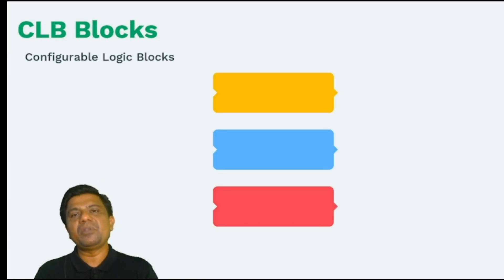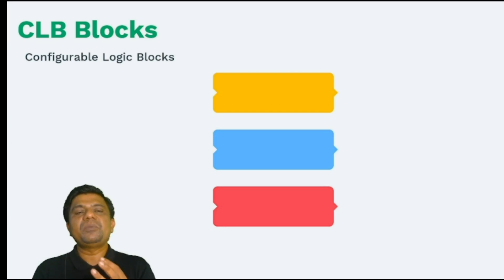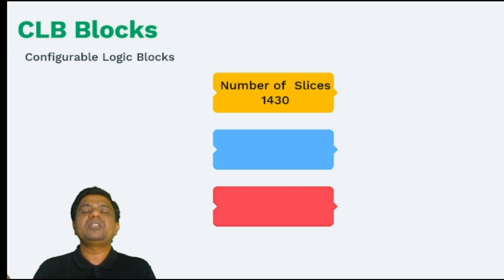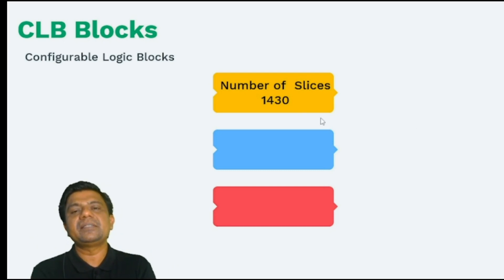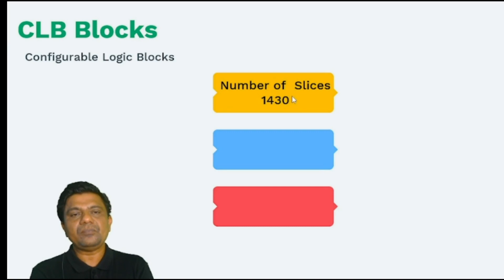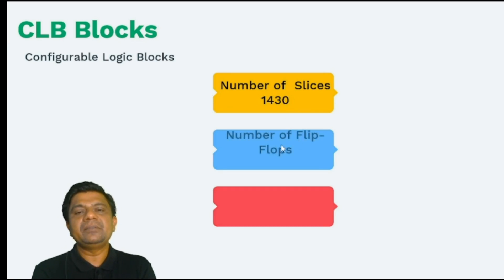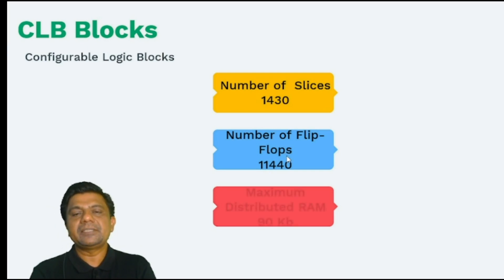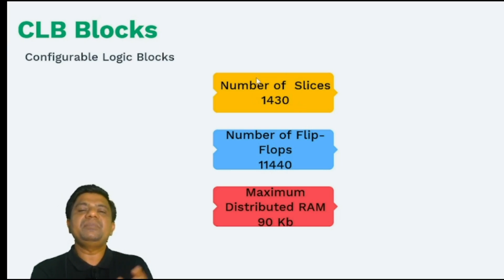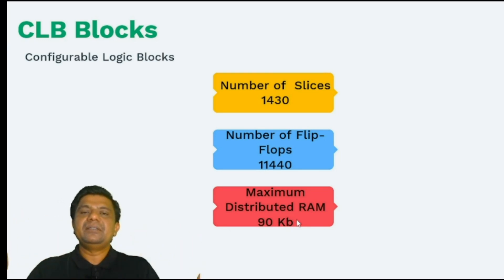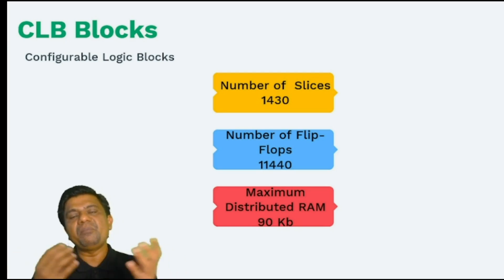Another important resource is the configurable logic block. There are many CLBs in the Spartan 6 FPGA, used to infer combinational and sequential logic. The Spartan 6 device has 1430 slices — each CLB has two slices — and 11,440 flip-flops (registers). The CLB resources can also be used as distributed RAM, with a maximum distributed RAM capacity of 90 KB.